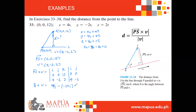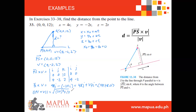Therefore the cross product is 24i + 48j + 0k, written in component form as (24, 48, 0). The magnitude of this cross product is the square root of 24² + 48² + 0².